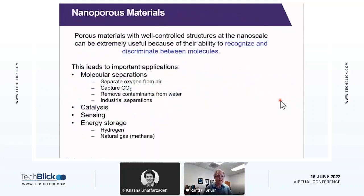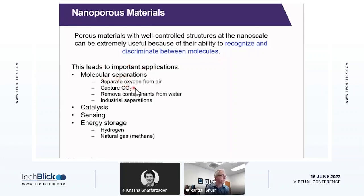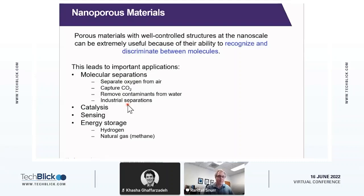So why are we interested in nanoporous materials? The basic idea is that porous materials with well-controlled structures at the nanoscale can be really useful for recognizing and discriminating between different molecules. So we can use this to perform separations — for example, you can separate oxygen from air, capture CO2 from exhaust gas or directly out of the air, or remove contaminants from water. There are a lot of separations in the chemical industry that are very energy intensive with current technologies like distillation, and nanoporous materials have the potential to perform those same separations at much lower energy cost.